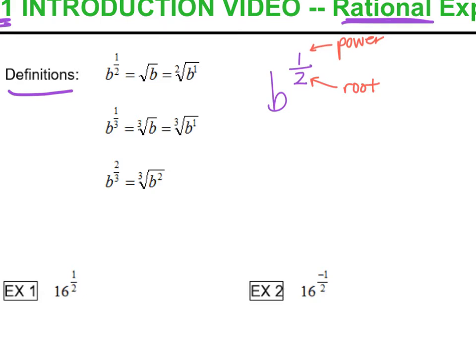b to the one-third, I can see it's b to the first power, and it's the third root. So a third root is a cube root, and if you would like to write that first power in there, you can write that in there as well.